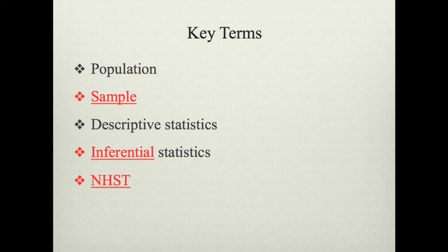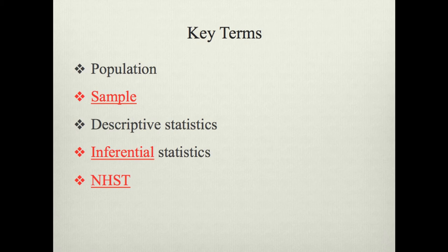The gist of the whole thing here is inferential statistics. This is where we use sample data to make inferences about a population, because we can't usually measure every member of a population. We draw random samples from a population and make inferences about it — that's the whole gist of statistical significance testing. NHST stands for null hypothesis significance testing, and we'll go over the difference between a null hypothesis and an alternative hypothesis in greater detail.